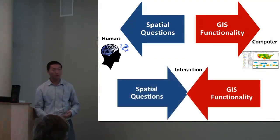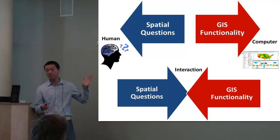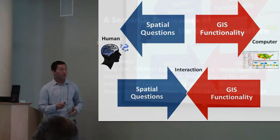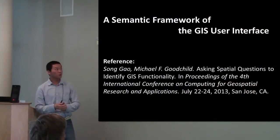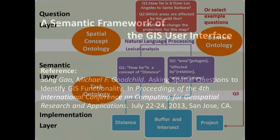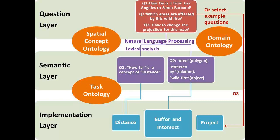So I found maybe we need some way to interact between the human spatial thinking, the spatial question, and link to the computer GIS functionality. One way is to organize such questions into some categorized GIS tools. Another way I propose is a semantic framework for the GIS user interface — some linkage between the human thinking and also the GIS functionality. So, this is a very direct framework: we collect spatial questions at the question layer, and then we integrate some spatial concept ontology — for example, from Werner Kuhn's top core concepts of spatial information — and also some task ontology, and then we can use some machine learning and intelligence system to implement and then get the output.